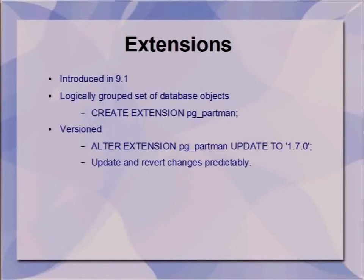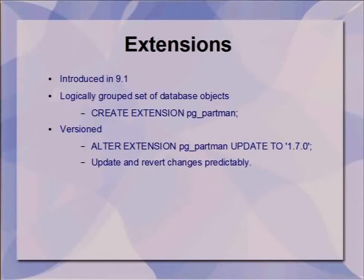All of my other tools are extensions. The extension system was introduced in 9.1 — it's about logically grouping things together in a way that's easier to control. All of the contrib modules in Postgres are actually extensions as of 9.1. You can have version-controlled groups of objects in the database, which allows more controlled updates of your code. If you have the same code installed in multiple databases, you can make sure they're all running the same versions, and if the extension author provides it, you can actually downgrade in a predictable way as well.